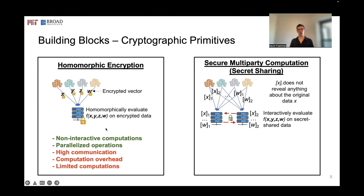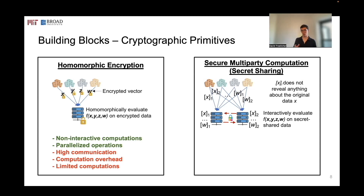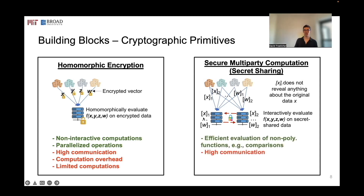The second building block is secure multiparty computation, or secret sharing. The original data are split into shares such that each share doesn't reveal any information about the original data. The computing parties can then use these shares to perform computation as if they were computing on the original data, without learning any information. The computations that can be done are much more versatile — many types such as comparisons can be done efficiently — but it comes with high communication overhead as all data must be sent to computing servers, which must collaborate to perform a computation.